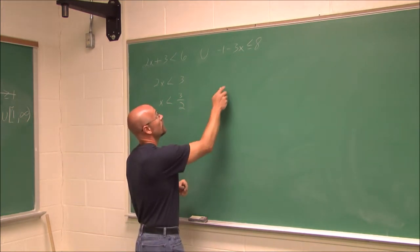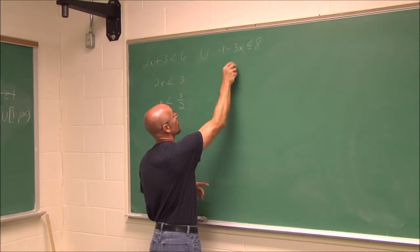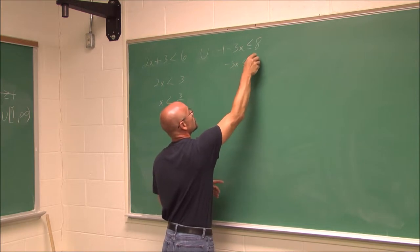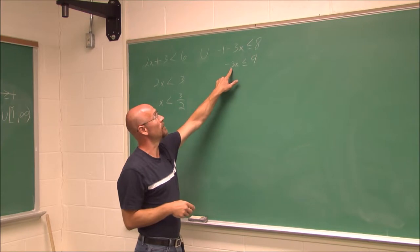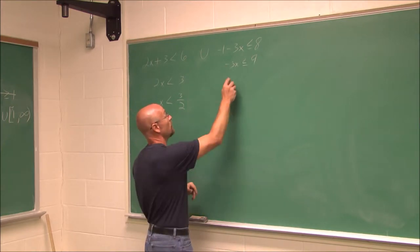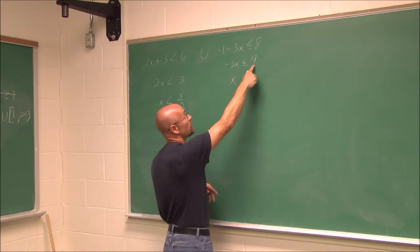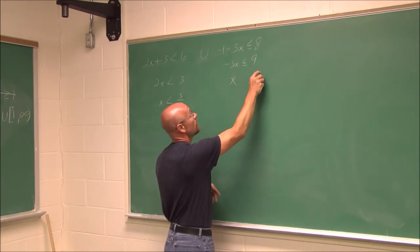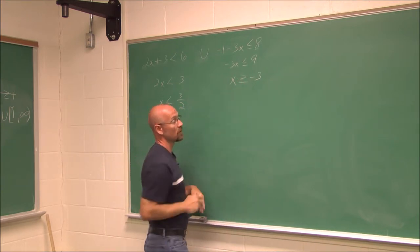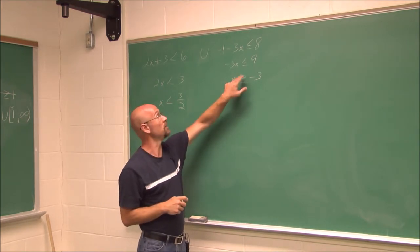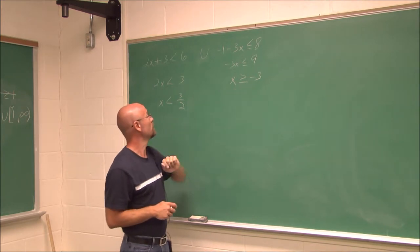For the second inequality, negative 1 minus 3x is less than or equal to 8. Adding 1 to both sides, we get negative 3x is less than or equal to 9. Dividing by negative 3 — and when we divide by a negative, the signs change. So x becomes positive, and 9 divided by negative 3 becomes negative 3. We notice the sign change on either side because of division by a negative. So we have x is greater than or equal to negative 3.